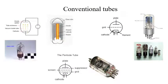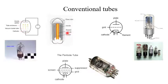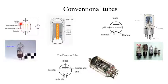Before going to the microwave tube, let us have a look at the conventional tubes. This is called the diode. It consists of a cathode with a filamentary arrangement — this is the heated cathode, this is the heater, and there is a filament associated with it. The anode is connected to the positive polarity of the power supply and cathode to the negative polarity. This whole thing is in vacuum at very low pressure.